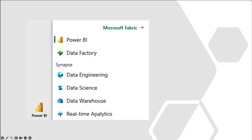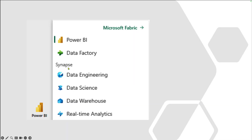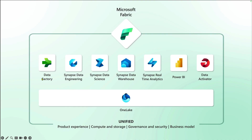Under Synapse, we have four things: Data Engineering, Data Science, Data Warehouse, and Real-Time Analytics. So if I summarize this Microsoft Fabric umbrella, it is a combination of three existing products — Power BI, Data Factory, and Azure Synapse. Now let's get started and talk about each individual workload in detail.